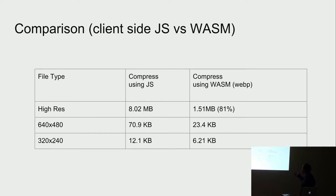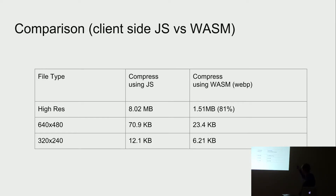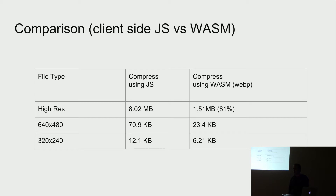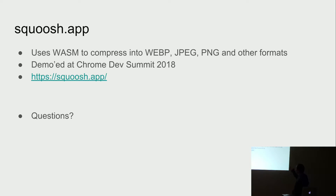This is the comparison. One of the high resolution images we were dealing with — if you compress with JavaScript Canvas, it came to 8 megabytes. If I use WASM with WebP compression, which is one of the best out there, it came to 1.5 megabytes — an 81% reduction. I would take that any day. Even the smaller images showed at least 50% compression. For an image-heavy application like ours, this is a huge deal. So we ended up using WASM to compress all the images.